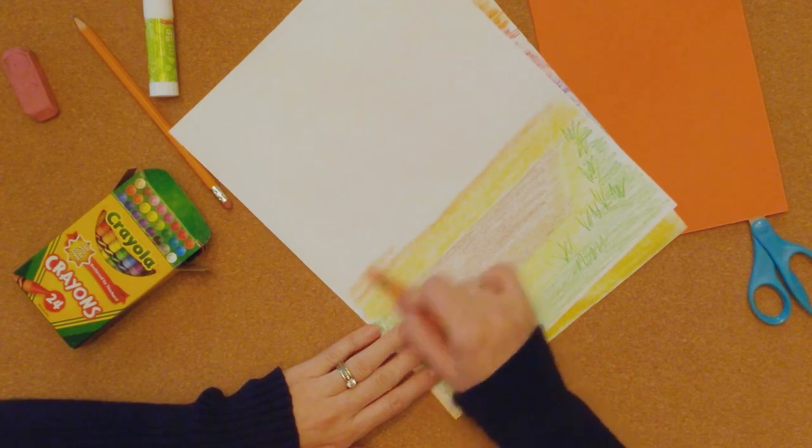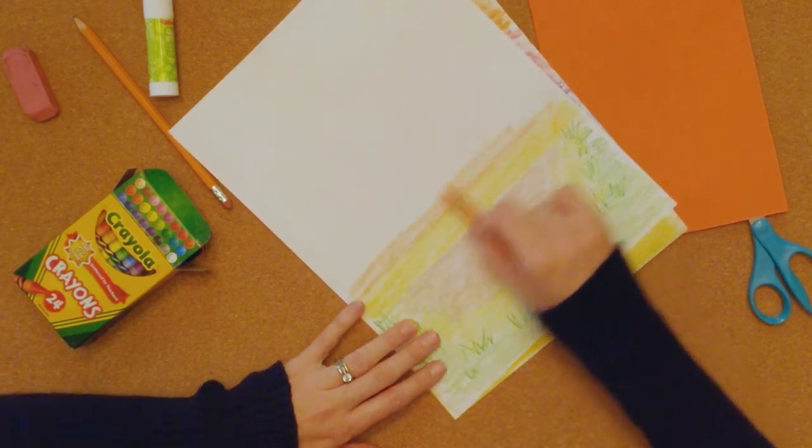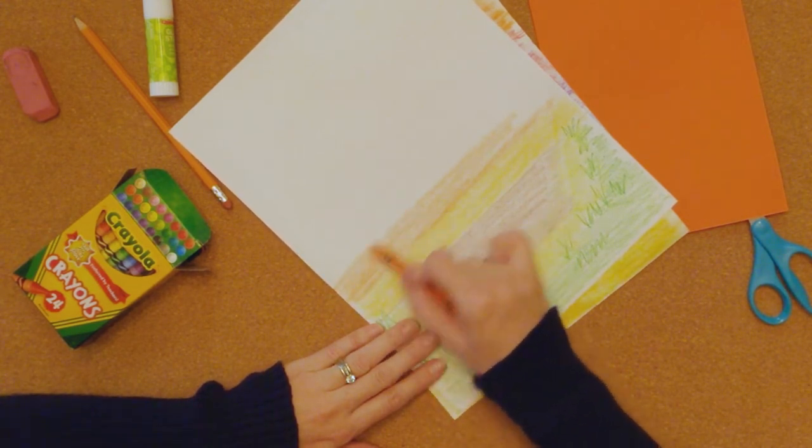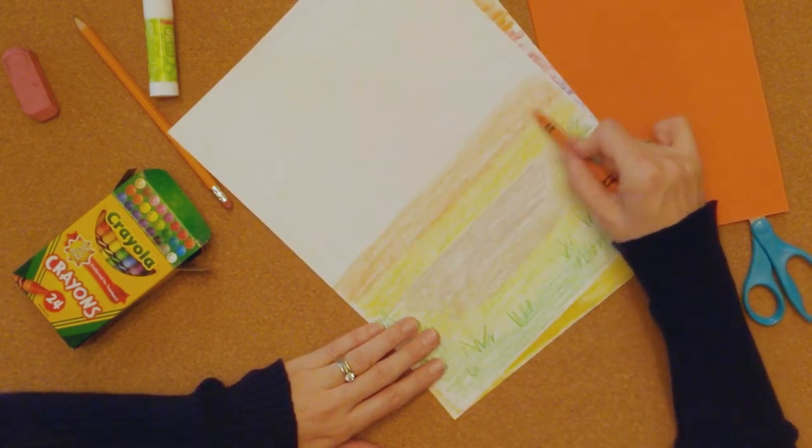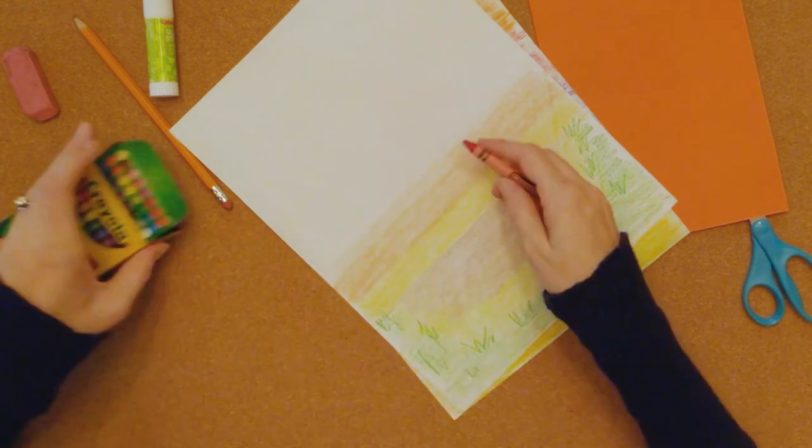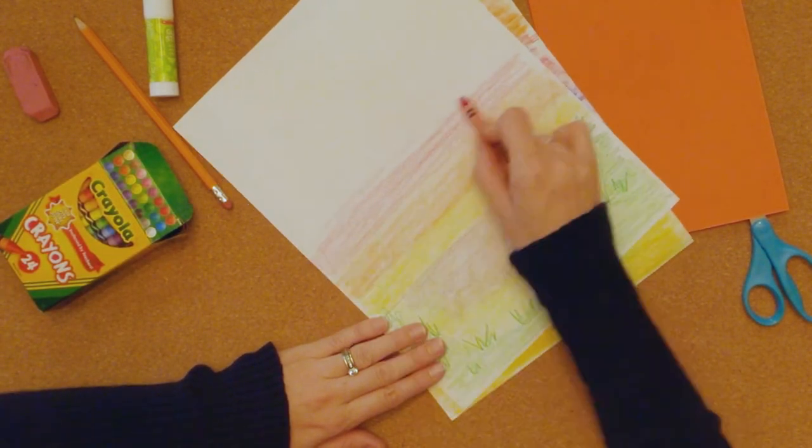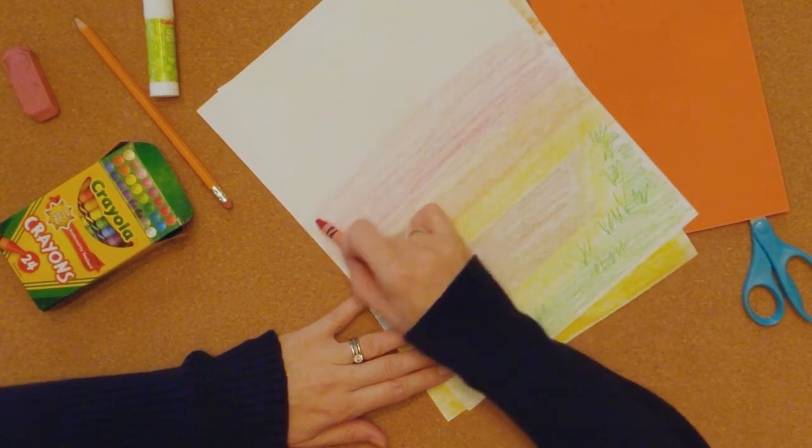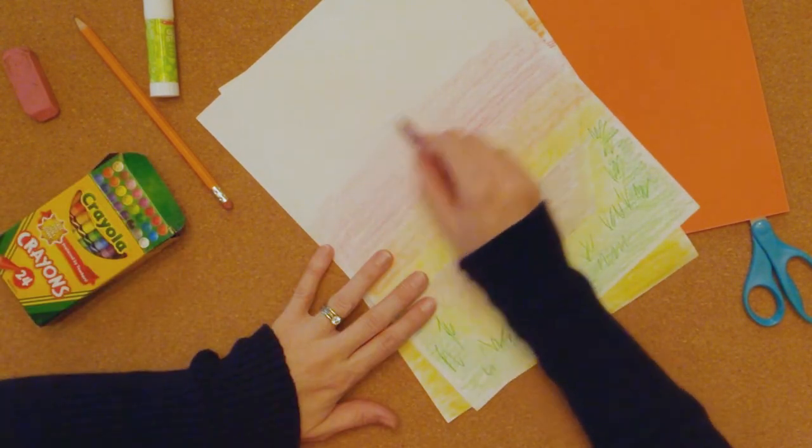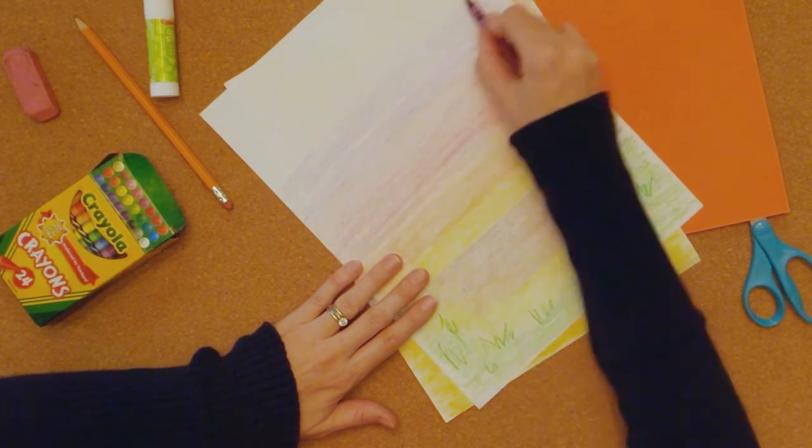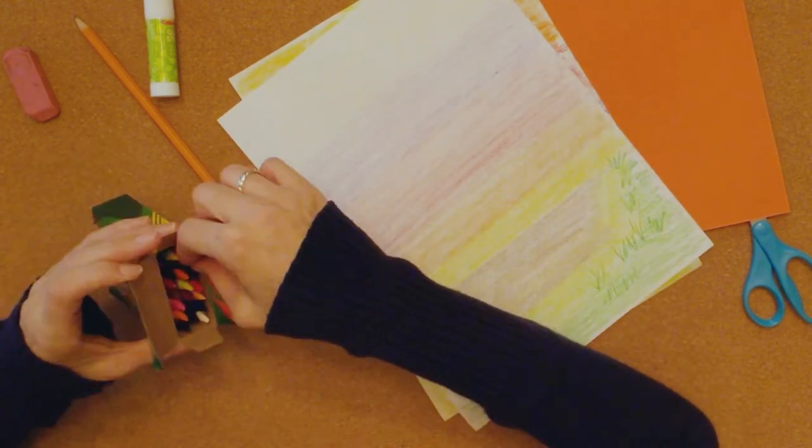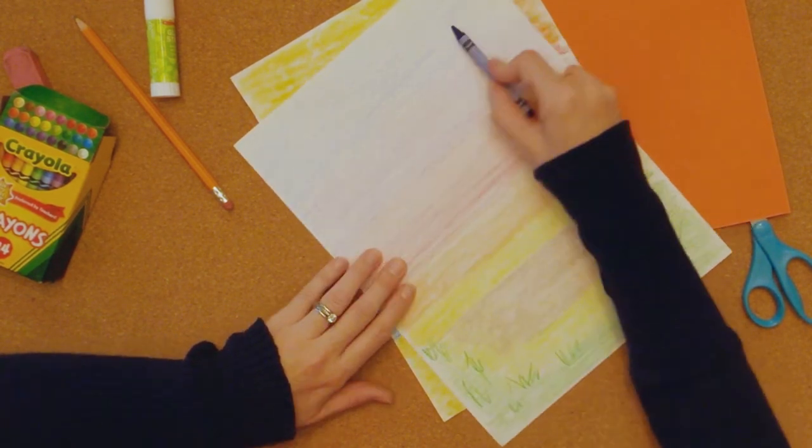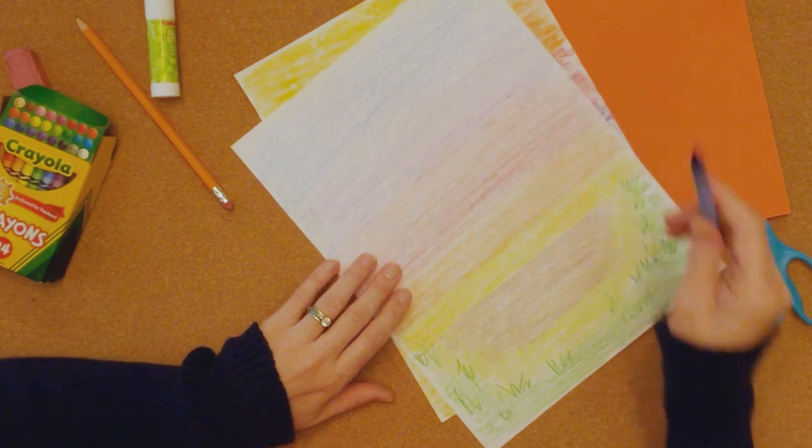And I'm going to do a stripe of yellow across because the sun is getting low. It's starting to go down behind the earth.